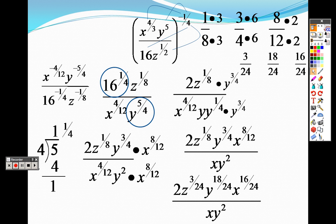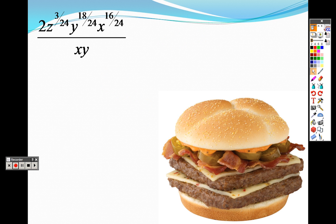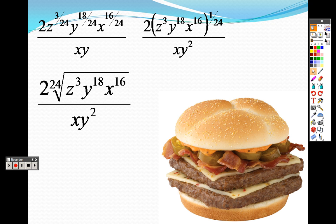So, I get z to the three-twenty-fourths, y to the eighteen-twenty-fourths, and x to the sixteen-twenty-fourths. Now, that they all have the same root, I can pull that one twenty-fourth out of all of them, and take it all to the twenty-fourth root. Because, remember, you can't put everything under the same root unless they have the same root there.